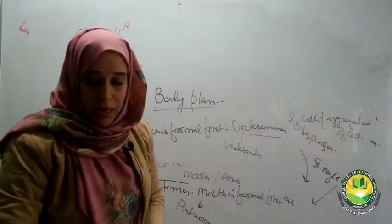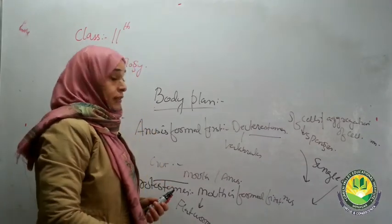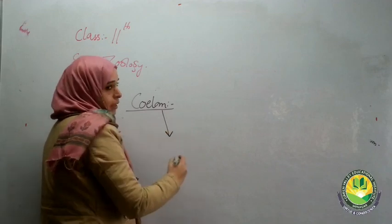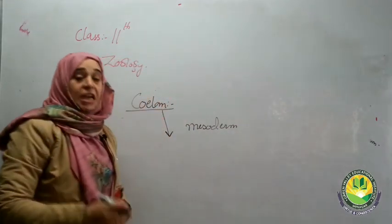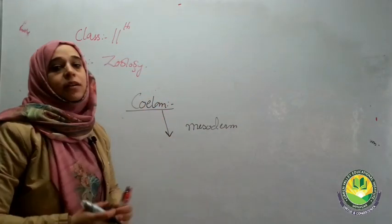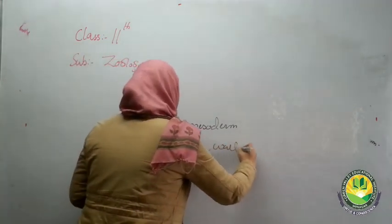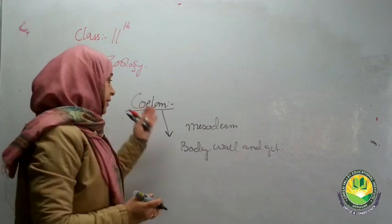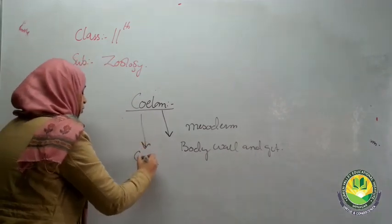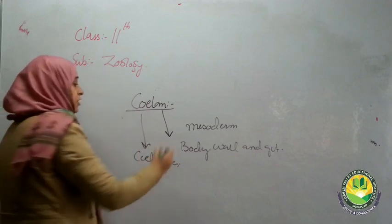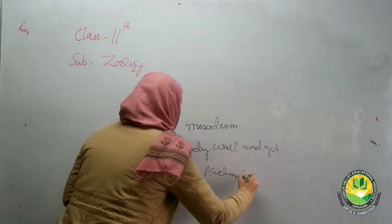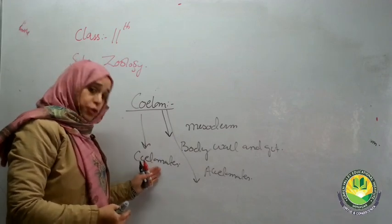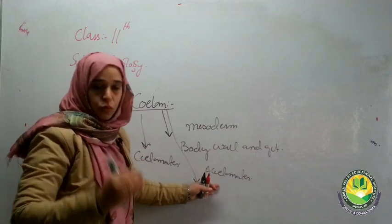The third basis of classification is the presence or absence of a body cavity called the coelom. This body cavity is formed by the mesoderm and is the cavity between the body wall and the gut. Animals that possess this body cavity are known as Coelomates, while those lacking this body cavity are known as Acoelomates. These are the two important categories based on presence or absence of the coelom.